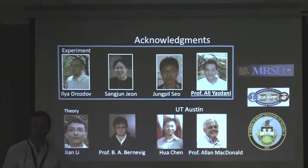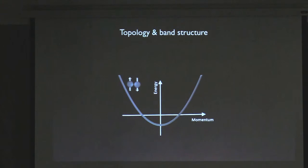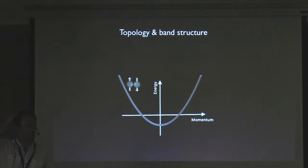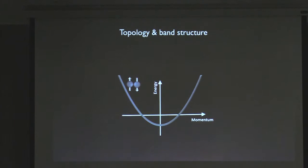We already heard how to braid Majoranas once you get them. But I'll go a step back and try to explain how to get Majoranas in the first place, and that's actually not an easy task. This is basically the recipe which was proposed first theoretically, and then several experimental groups tried to realize it in different systems. It turns out to make Majoranas you need three ingredients: you need superconductivity, you need magnetism, and you need spin-orbit coupling.